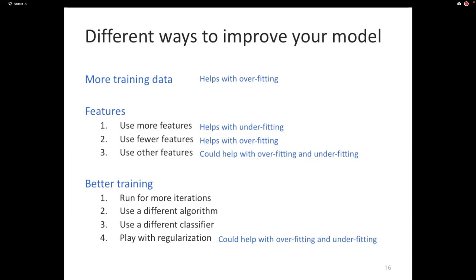Adding more training data helps overfitting because with more data the model has a harder time memorizing it all. Adding more features can help underfitting by improving expressiveness. Removing features can help overfitting. Playing with regularization can help either: increasing regularization combats overfitting, but making it too strong can cause underfitting because the model loses its ability to express the concept.